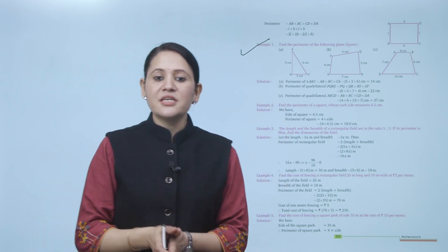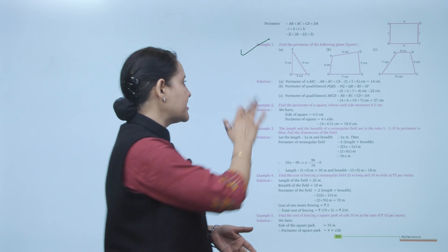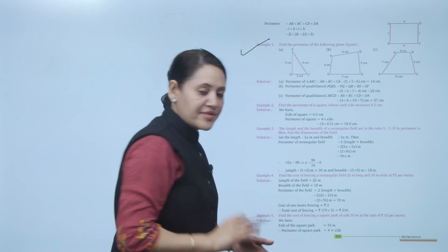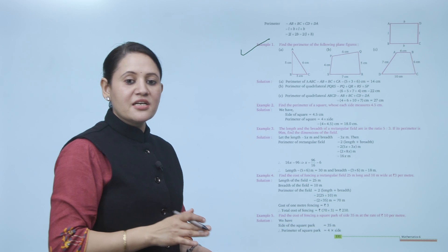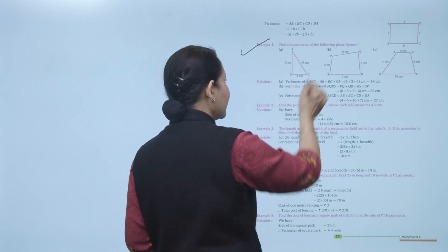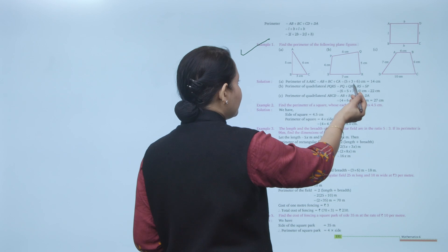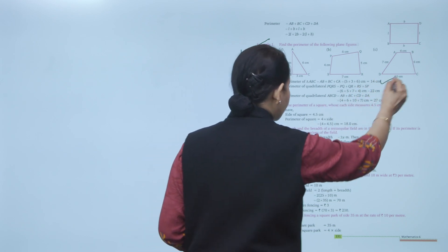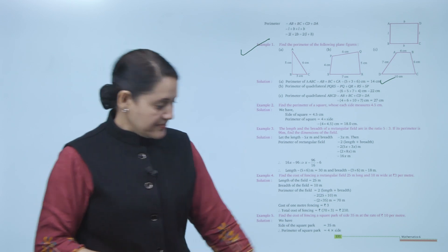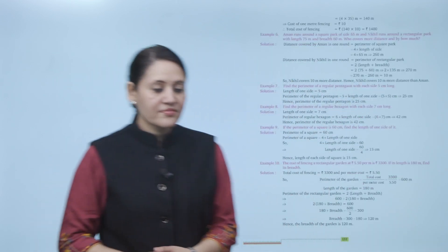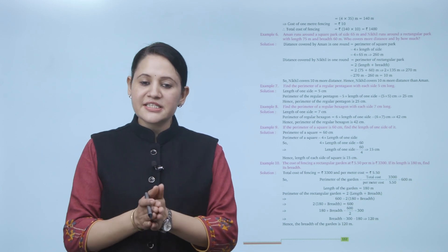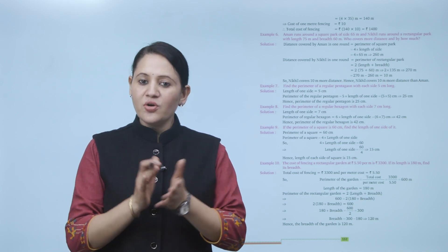Now we will take an example. Find the perimeter of the following plane figure. The first one is a triangle with sides five centimeters, three centimeters, and six centimeters respectively. Perimeter of triangle ABC equals AB plus BC plus AC, that is five plus three plus six, which equals 14 centimeters. Some more examples are given here to give you better understanding — practice them.